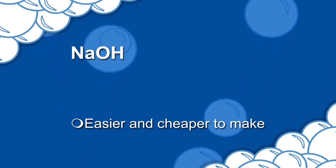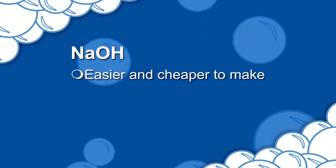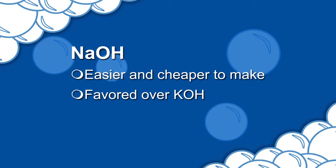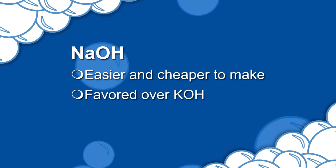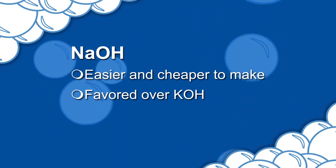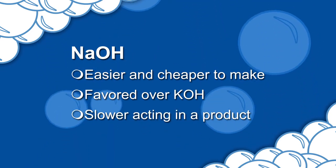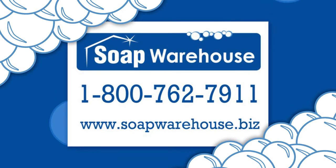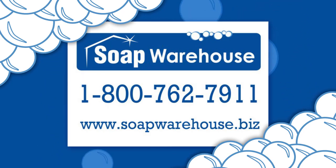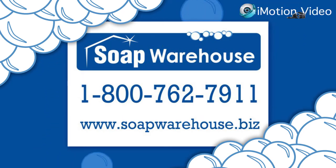NaOH is easier and cheaper to make, so it is favored over KOH even though it is slower acting in a product. Call us at 1-800-762-7911 to discuss your needs and the best one for you.